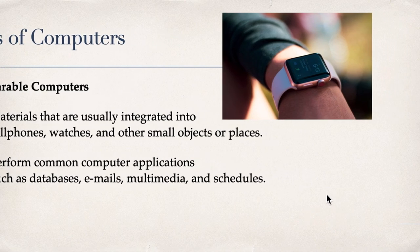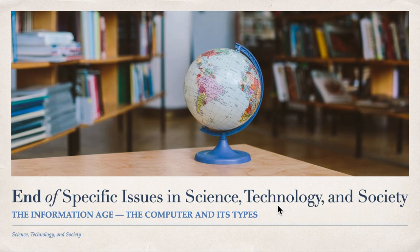So those are the different types of computers. To recap: under personal computers, we have desktop computers and laptops. Then we have the personal digital assistant — cell phones or smartphones. We have servers, mainframes, and finally wearable computers like smartwatches.